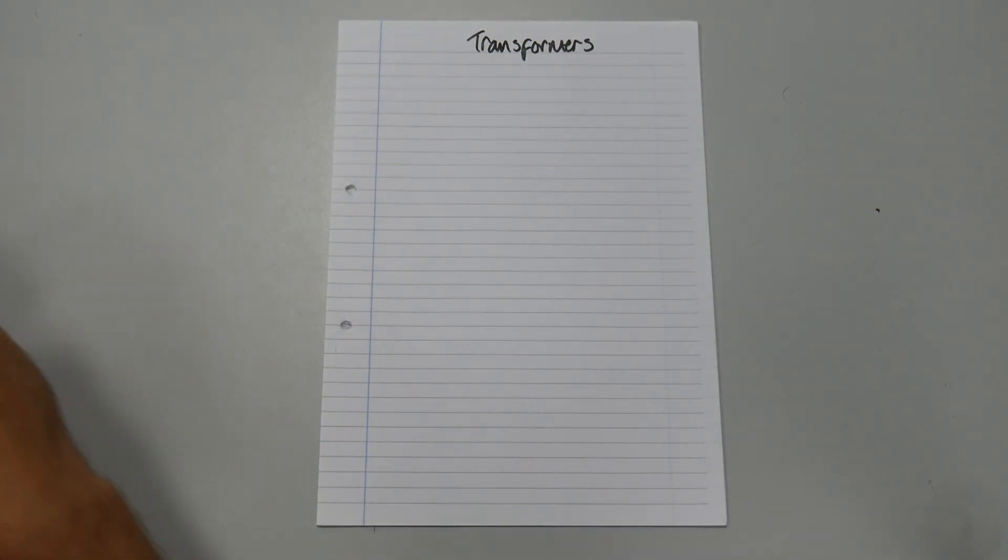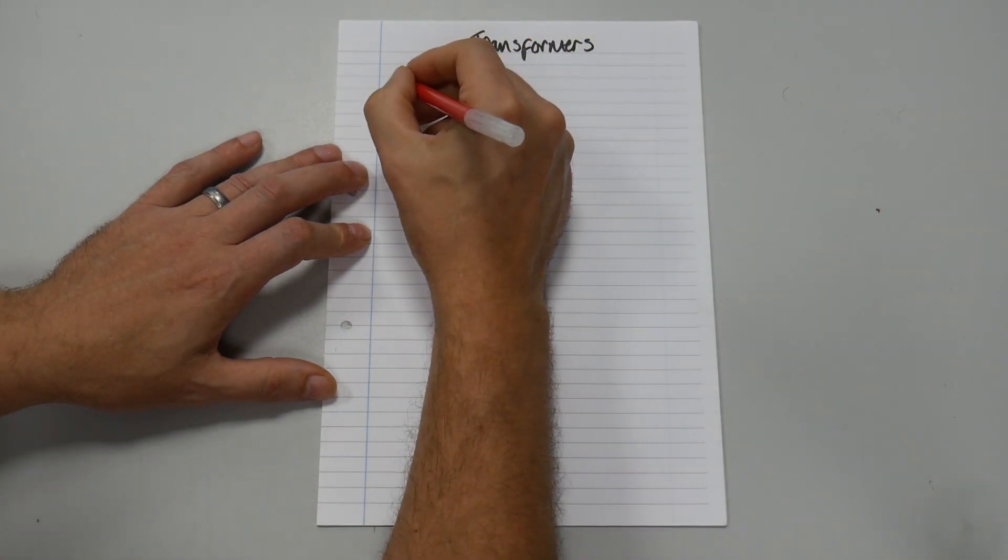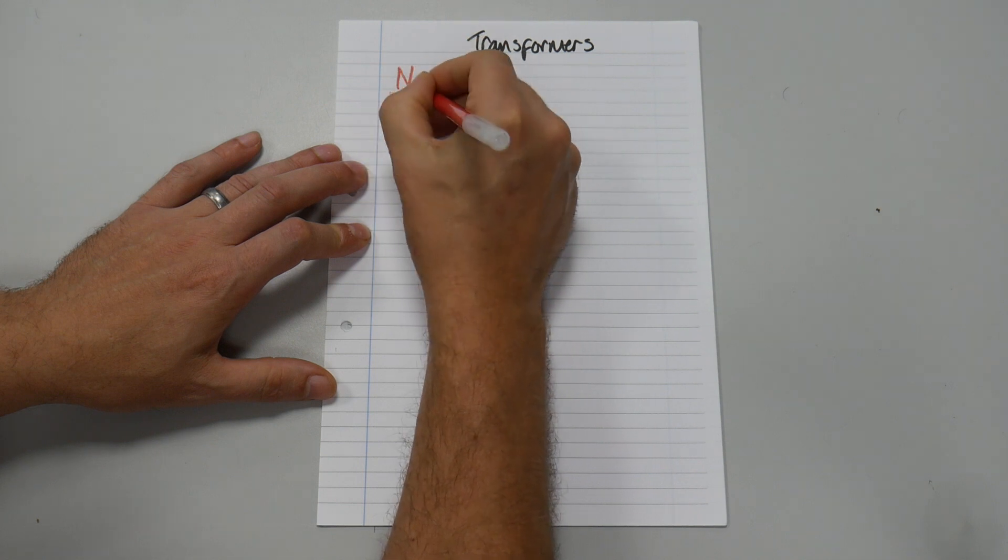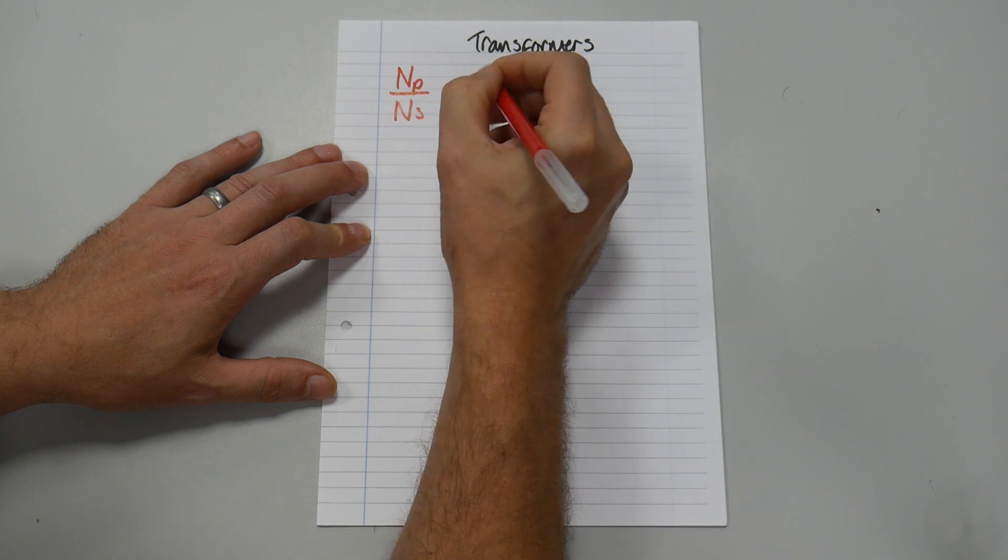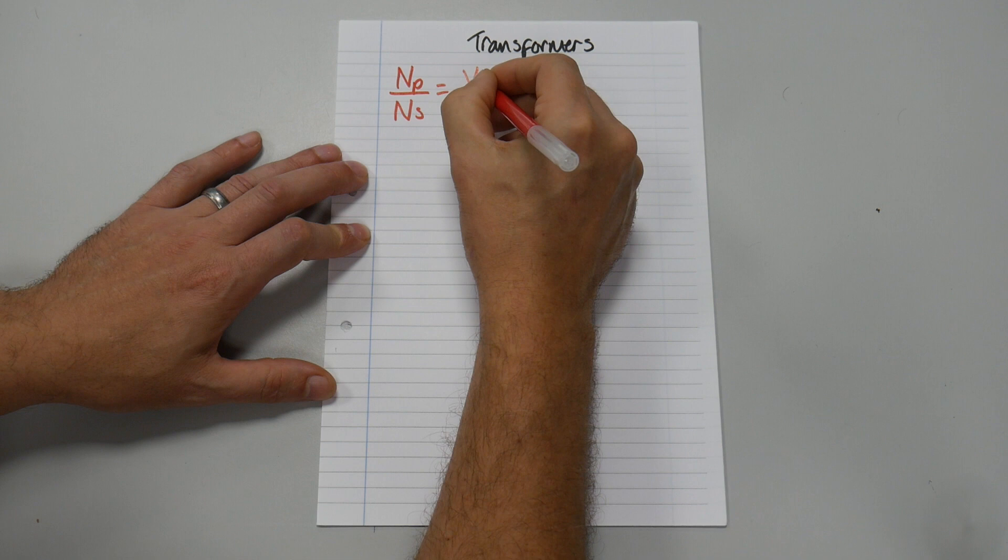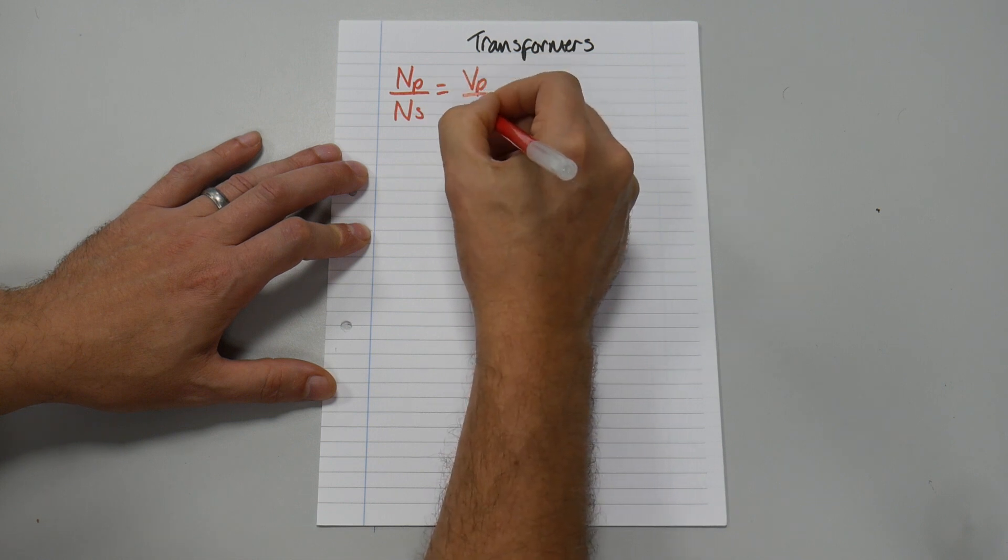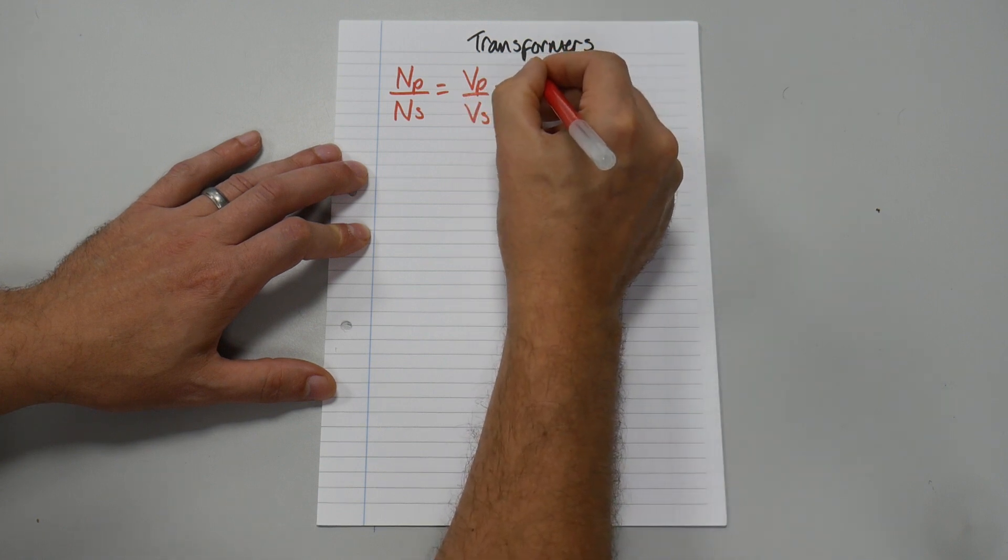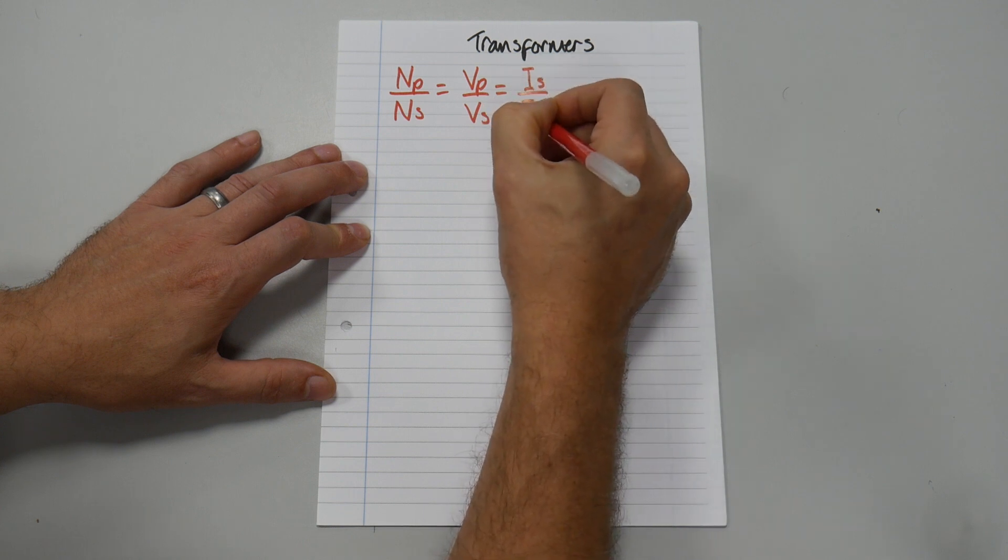I'll change my color pen to red. So the formula for Transformers is NP over NS equals VP over VS, and that equals IS over IP.